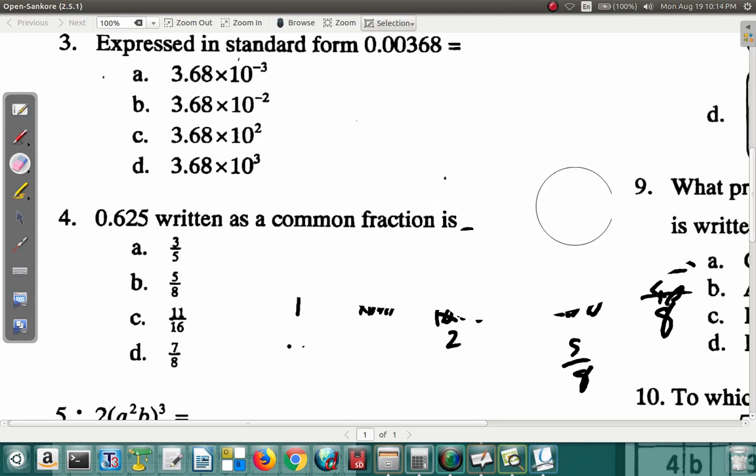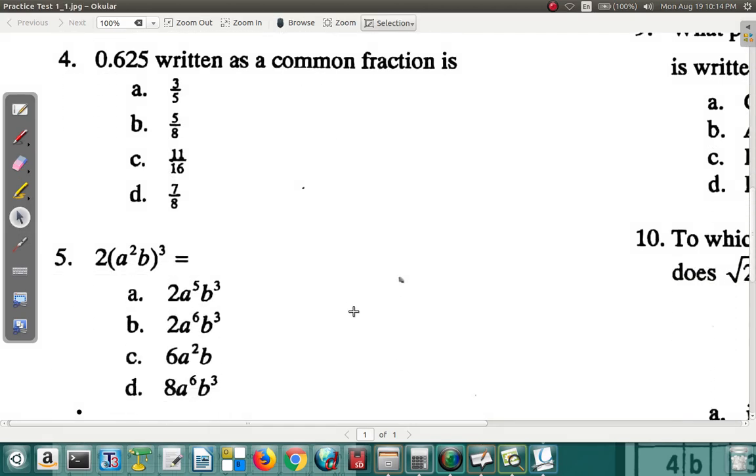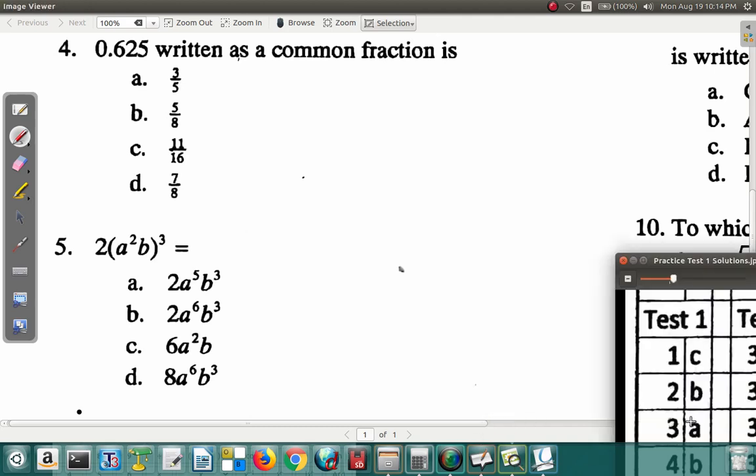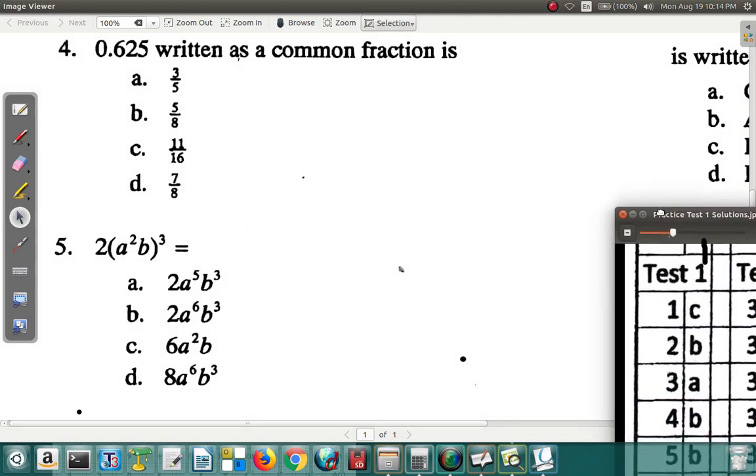Now we look at question 5. Question 5 says 2 open bracket a squared b close bracket all cubed is equal to... What do you have for it? Let's see, the answer for question 5 is b, it is b. Let's look at what's happening here. If you remember that when you have a term in brackets raised to a power, you will multiply the powers.